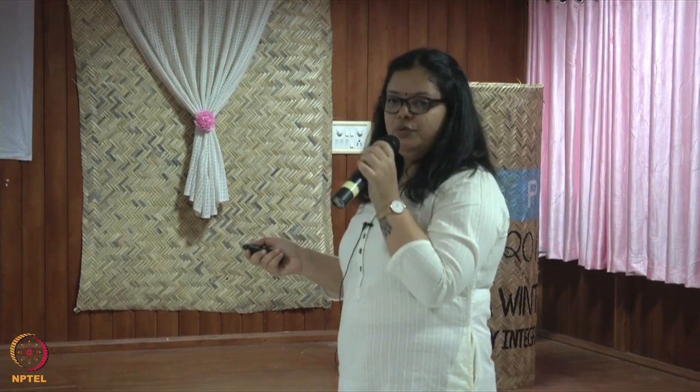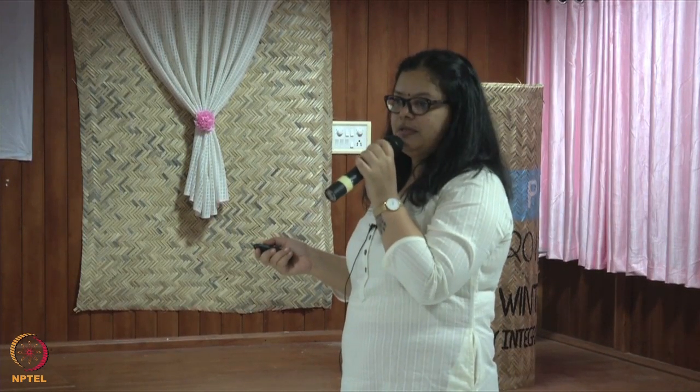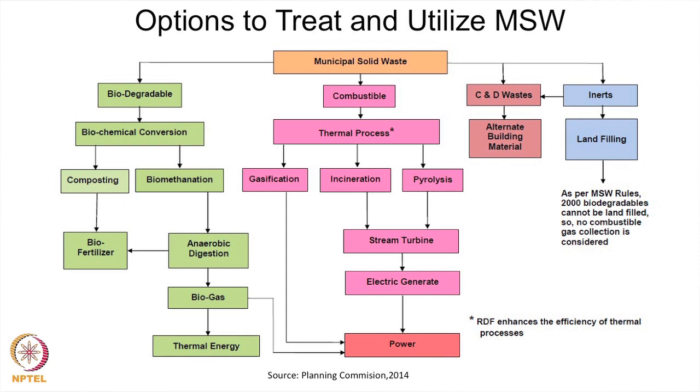These are the options for treating and utilizing different kinds of municipal solid waste. Biodegradable waste can be managed through composting, and through biomethanation, which produces biogas that can be used for cooking and heating. Combustion is used for non-biodegradable waste. In India, there are three methods: gasification, incineration, and pyrolysis. Incineration is most common; the other two are still being tested as they require certain temperatures — India's humidity is a challenge.